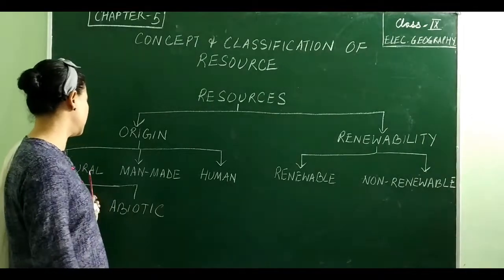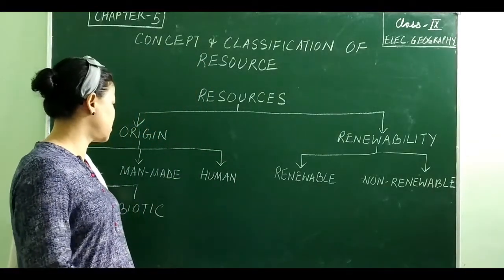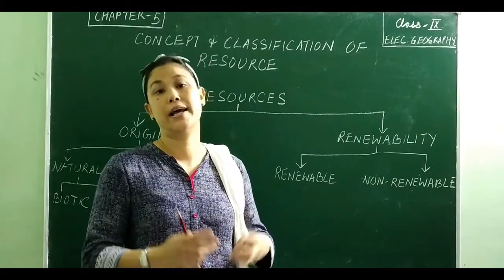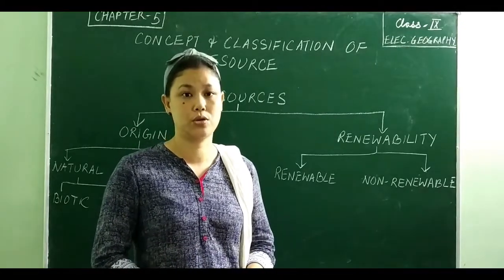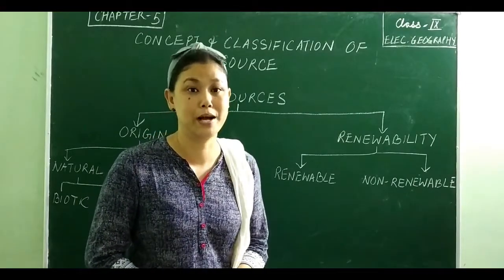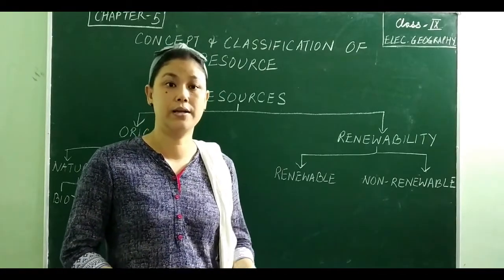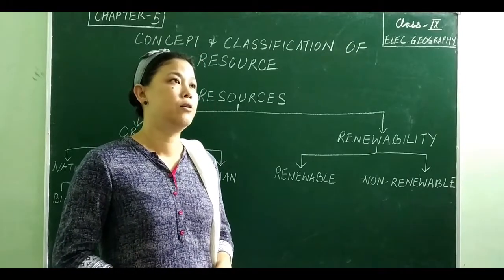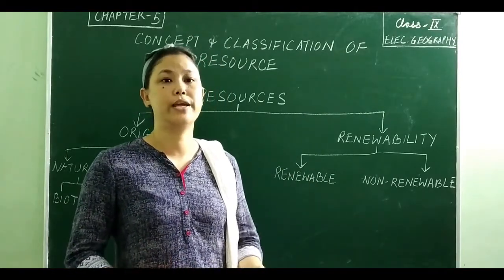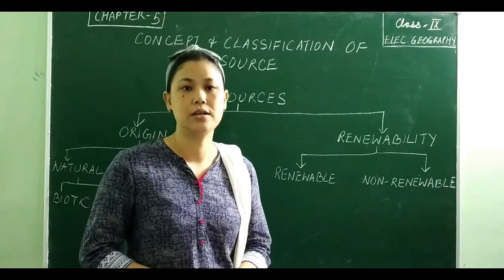Natural resources are those resources which are found in nature. In the last class we talked about how an element remains just an element until it is used to meet human needs. Whatever exists in nature is useful, but until it is used it does not become a resource. Hence, whatever we get from nature is termed a natural resource. Examples include solar energy, water, wind, plants, and animals.